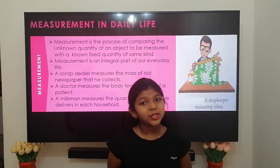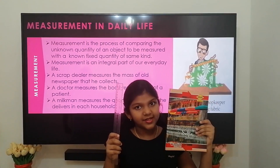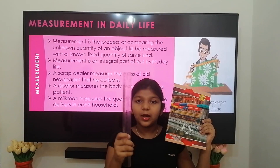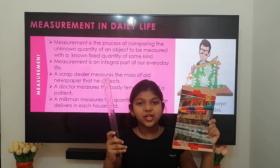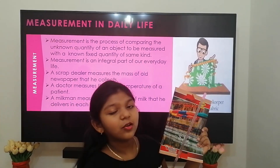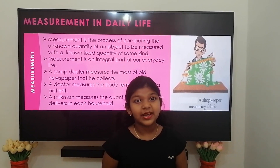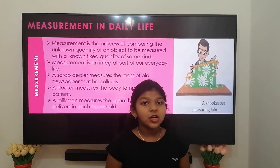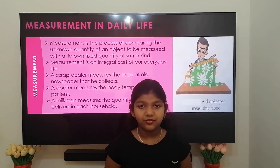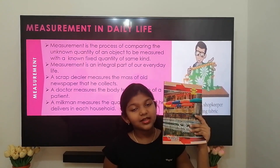For better understanding, let me show how to measure the length of a notebook. The unknown quantity which needs to be measured is the notebook, and the known fixed quantity is a ruler. I am going to measure the length of the notebook. The length of the notebook is 24 cm. Any measured quantity is always expressed by a number followed by a unit: quantity equals numerical value times unit. Here the numerical value is 24 and the unit is cm. Thus the length of the notebook is 24 cm.